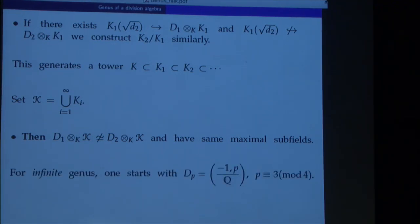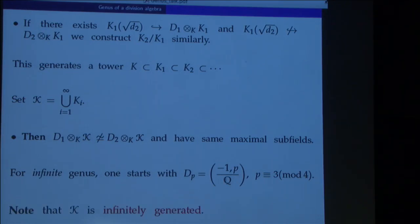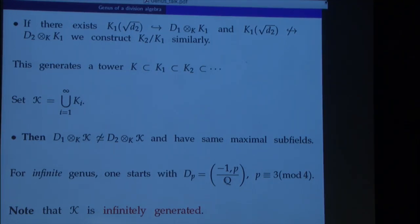To construct an infinite genus, you can take this family of algebras where p is a prime congruent to 3 mod 4 and do something similar. Note that this field script-K is huge: at each stage we adjoin the function field of a certain quadric, so K_i over K_{i-1} has transcendence degree 3. The resulting field will therefore have infinite transcendence degree. Of course this field never occurs when you look at the quaternion algebras corresponding to Riemann surfaces.